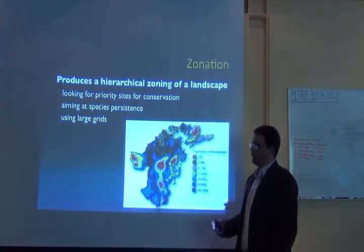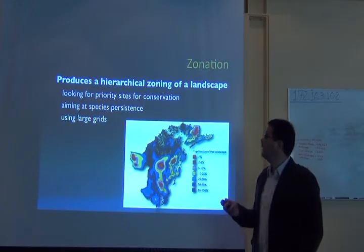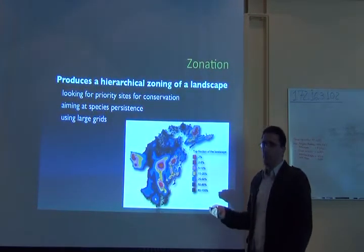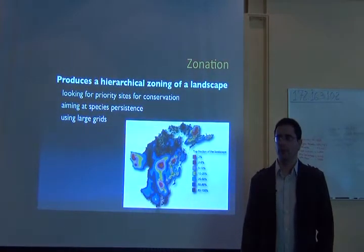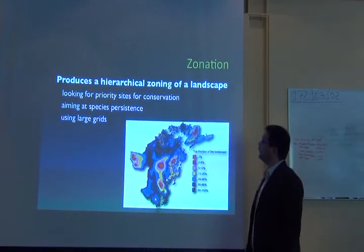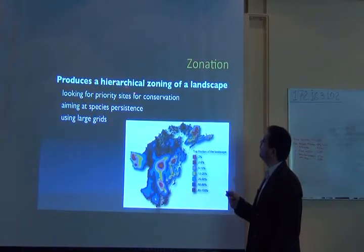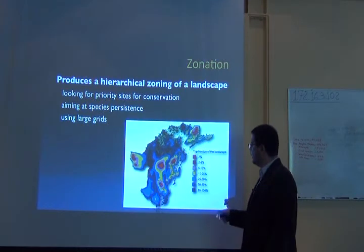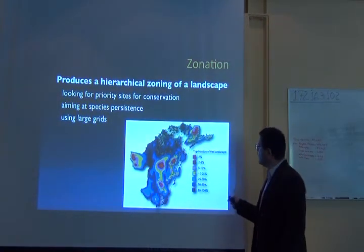What does Zonation do actually? As any other conservation planning software, it produces a map of priorities. It gives you what are the best places to allocate your finite resources for taking a given conservation action. Zonation produces a hierarchical zoning of a landscape looking for priority sites for conservation. This example comes with Zonation — the Hunter Valley in Australia — and has the whole region being prioritized.